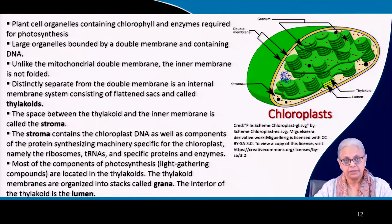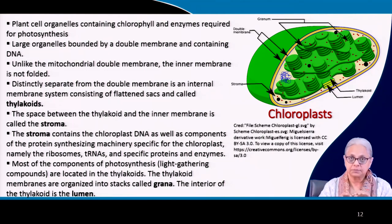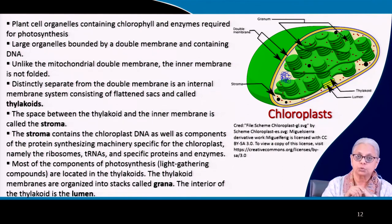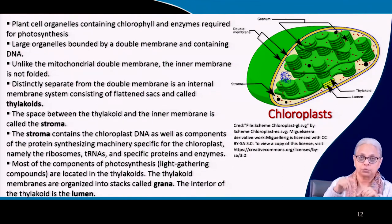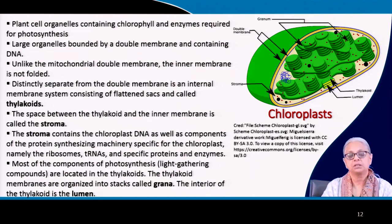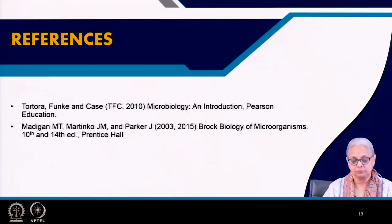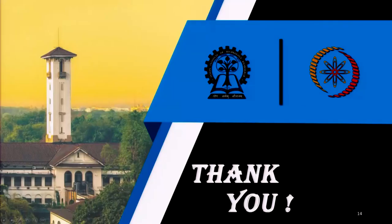The thylakoid membranes are themselves stacked together — they are organized into stacks and these stacks are called granum. One stack is a granum and multiple stacks are grana. So, we come to the end of this particular lecture. Thank you.